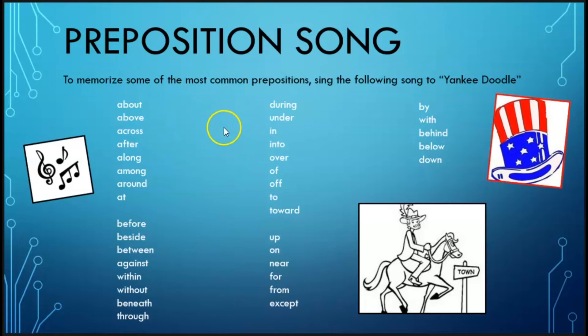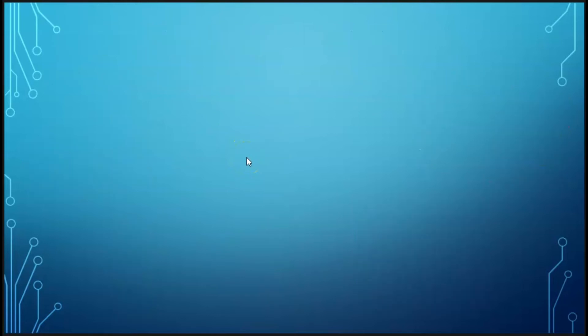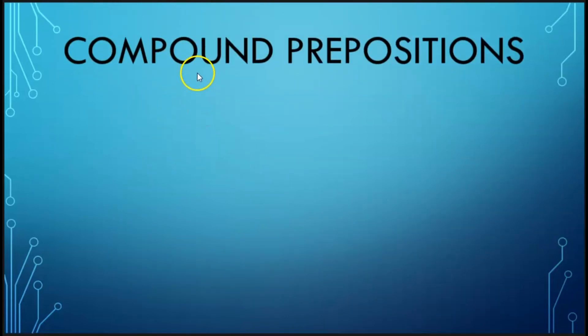Some prepositions are compound prepositions. A compound preposition consists of more than one word, sort of like a verb phrase. You have a preposition that's made up of more than one word.